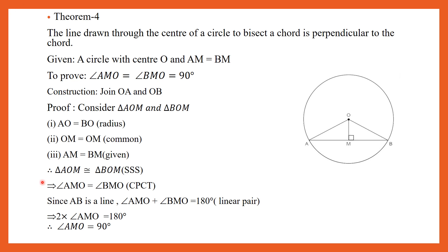Theorem 4 is the converse of Theorem 3. That means the line drawn through the center of a circle to bisect a chord is perpendicular to the chord. We are given a circle with center O and the chord AB is bisected, meaning AM is equal to BM. We need to prove that angle AMO is equal to angle BMO, equal to 90 degrees. For the construction, join OA and OB.